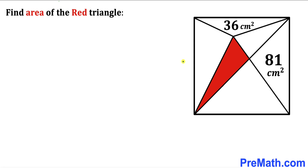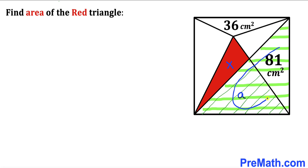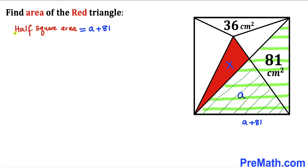Now let's go ahead and solve this given problem. Let me label the red shaded triangle area as x centimeters square, and the area of the other shaded triangle as lowercase a. The area of half of the square equals a plus 81, so we write: half square area equals a plus 81.